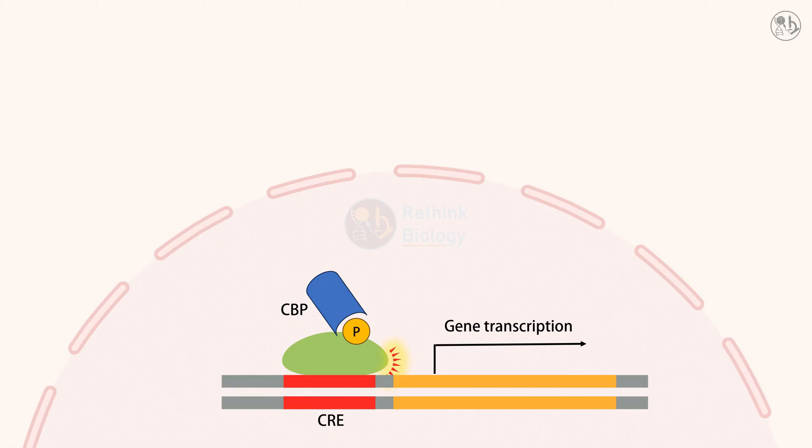By activating CREB, CAMP can regulate the expression of many genes that are involved in various cellular processes such as metabolism, growth, and differentiation.